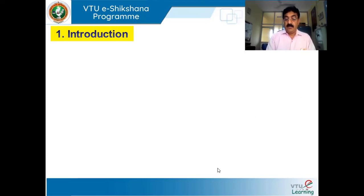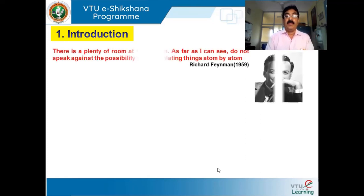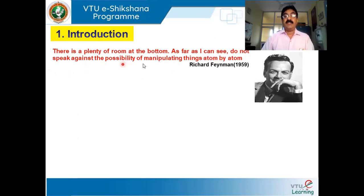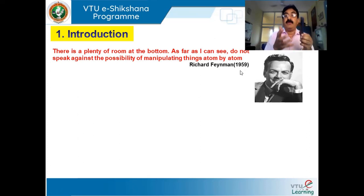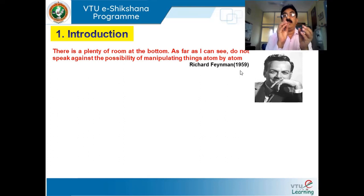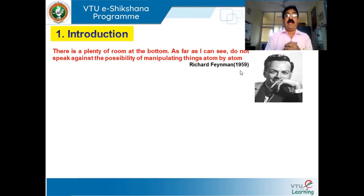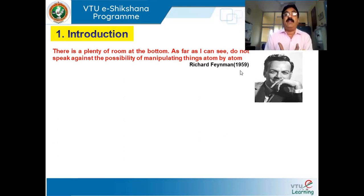What is this nanomaterial? Who gave the first idea? It is Richard Feynman. Way back in 1959, Feynman said, 'There is plenty of room at the bottom. I do not speak against the possibility of manipulating things atom by atom.' Till 1959, we were not thinking about manipulation of atoms. But Feynman said it is possible to arrange atoms according to our will and wish, thereby we can design a material. There is plenty of opportunity for this type of technology — you can play at the atomic level.